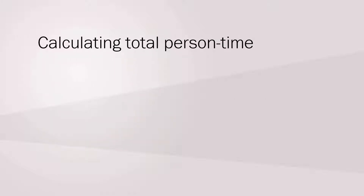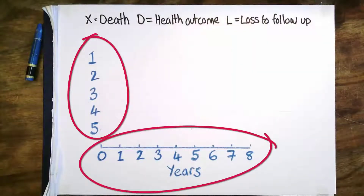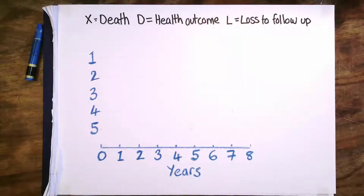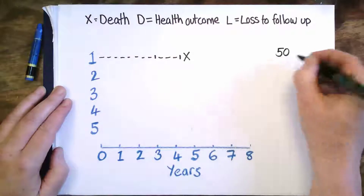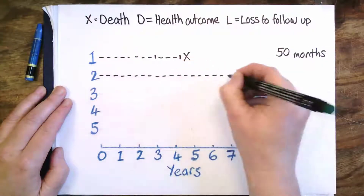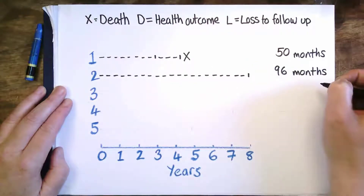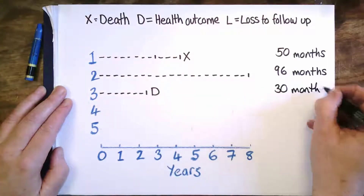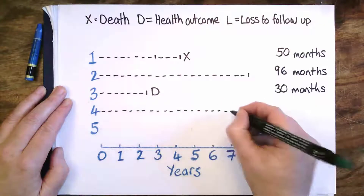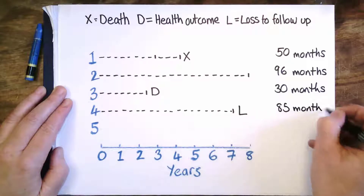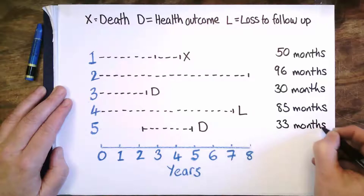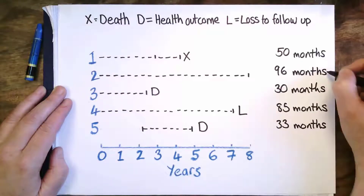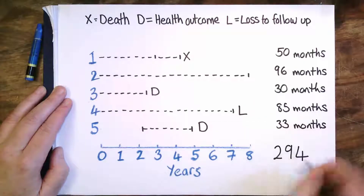Let's explain person time in more detail through a study following five subjects over eight years — equivalent to 96 months. Subject one dies in year four: person time is 50 months. Subject two is present throughout the whole study: 96 months. Subject three develops the health outcome in year two: 30 months. Subject four migrates away and is lost to follow-up in year seven: 85 months. Subject five joins the study in year two and develops the health outcome in year four: 33 months. The total person time is 50 + 96 + 30 + 85 + 33 = 294 person months.